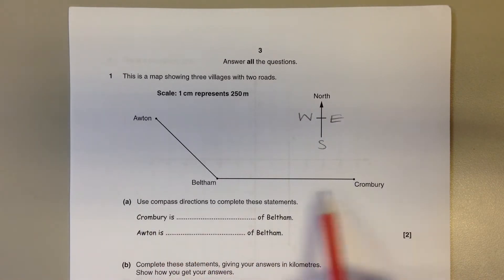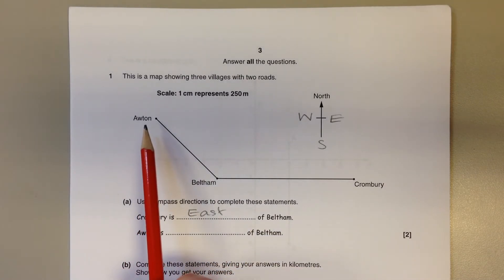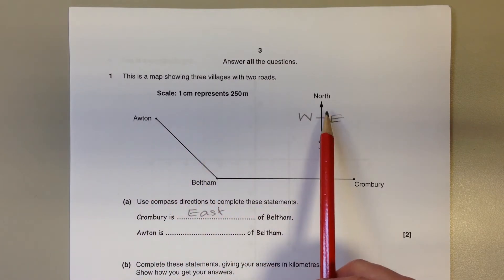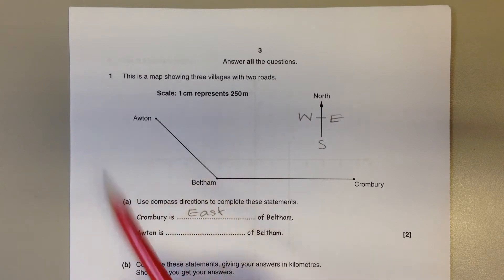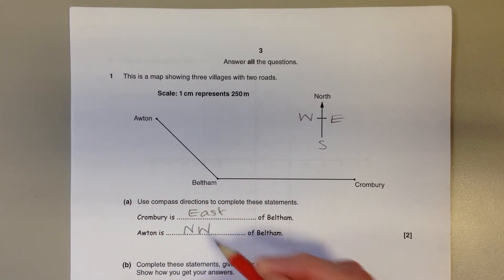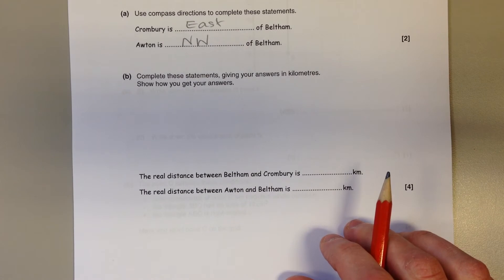Cronbury is which direction from Beltham? Cronbury is east. And Aerton, where is that in relation to Beltham? If you compare it against your compass, you can see that it's kind of in between north and west, and that direction is called northwest.